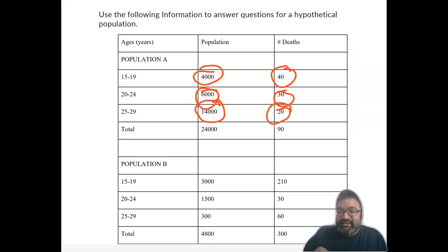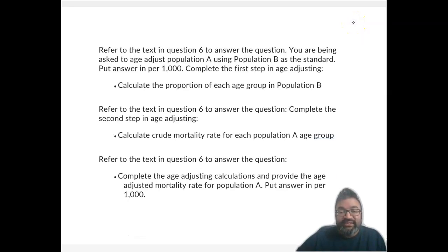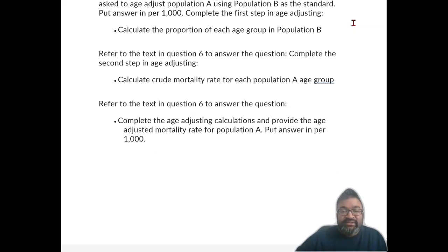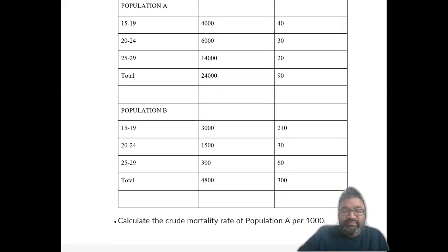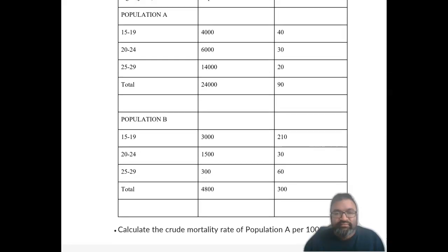Now what we're going to do is use the age group in population, use some of the proportions in population B to form population A. So remember we went over the crude mortality rate. So now put answer in per 100,000 provide the age adjusted mortality rate. Let's take a peek at how we're going to do this.